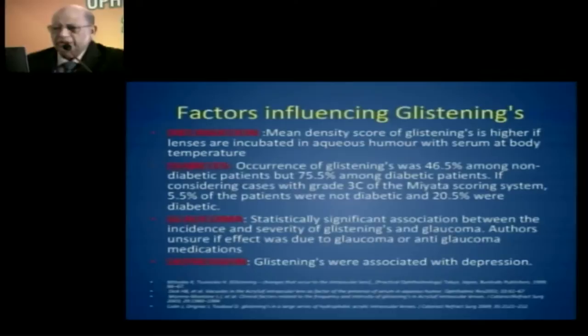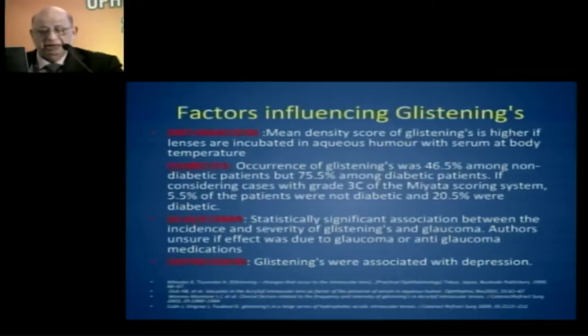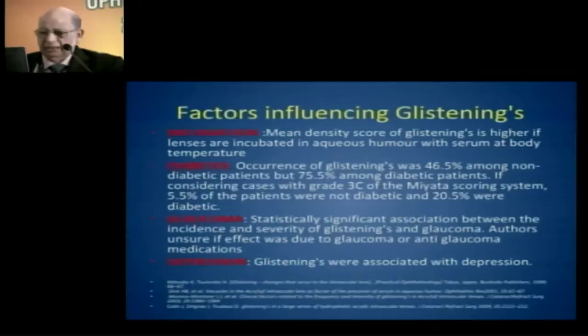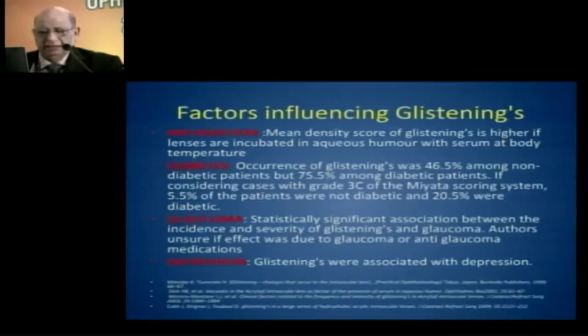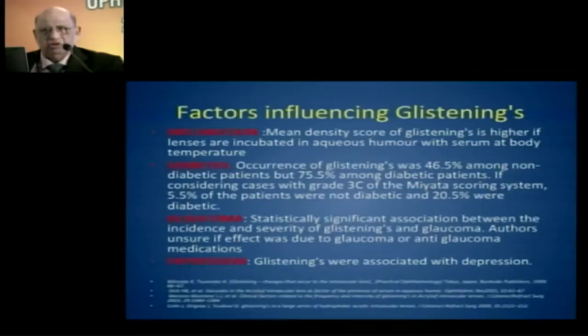Factors influencing glistening: the mean density glistening score is higher when lenses are incubated with aqueous humor at body temperature. Occurrence was more common in diabetics compared to non-diabetic patients, and density was greater in glaucoma patients — a statistically significant association. We are not sure whether it is the glaucoma per se or the anti-glaucoma medication. Interestingly, patients on anti-depressive agents also had an increase in glistening.